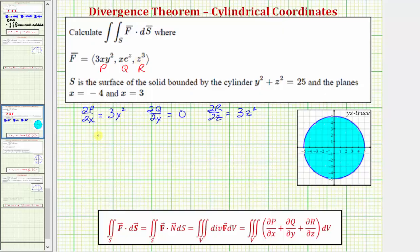Which means the given surface integral or flux integral, often expressed as the double integral over the surface S of F·n dS, is equal to the triple integral over the solid region V of the sum of the partial derivatives, which would be 3y² + 3z², differential V.